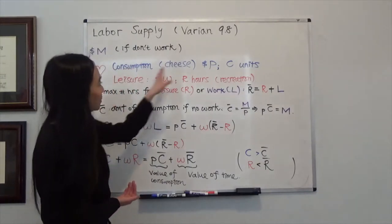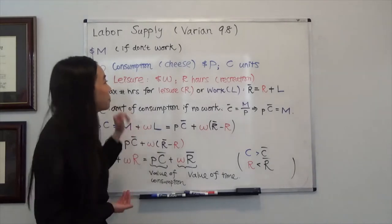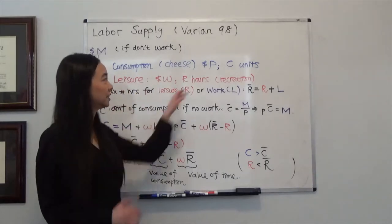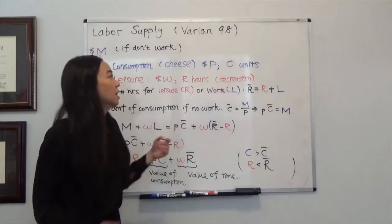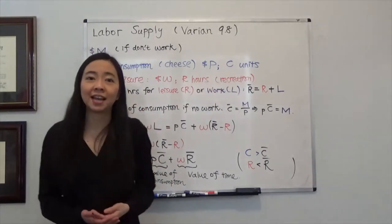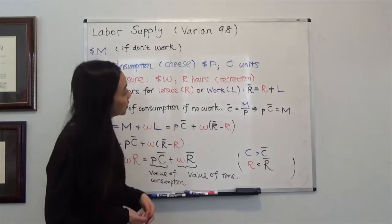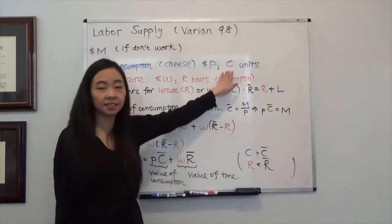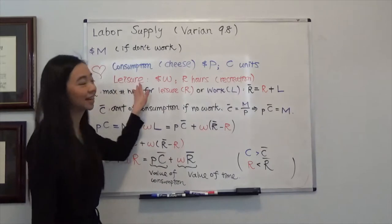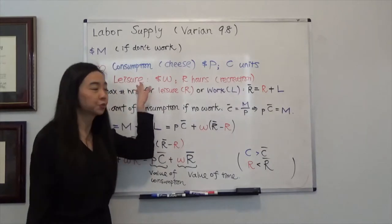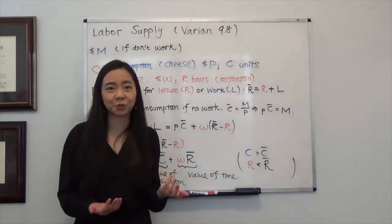Suppose we only consume cheese and the price of cheese is P dollars per unit. Also assume that at the end of the day, you choose to consume C units of cheese. And you also like leisure — so what is the value of leisure?